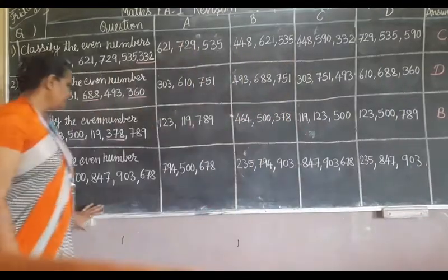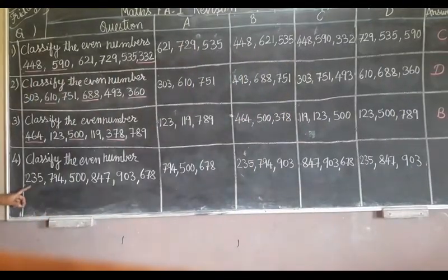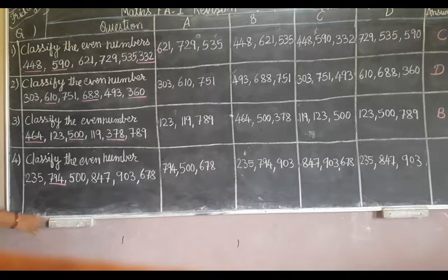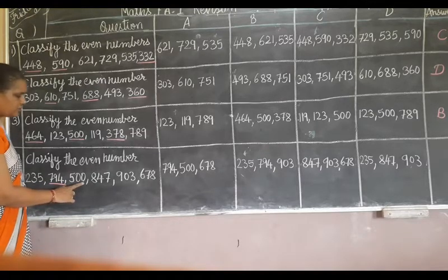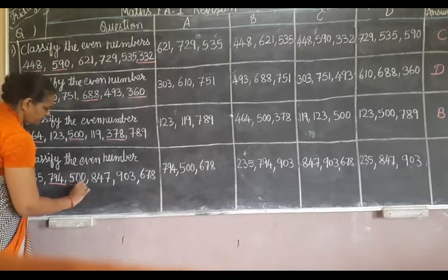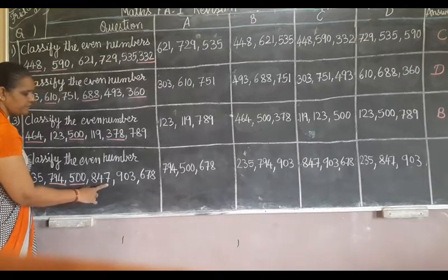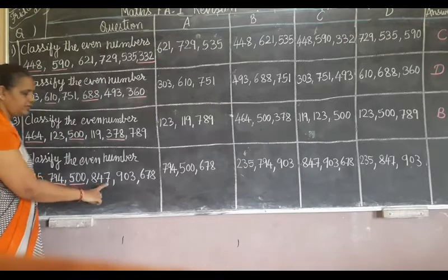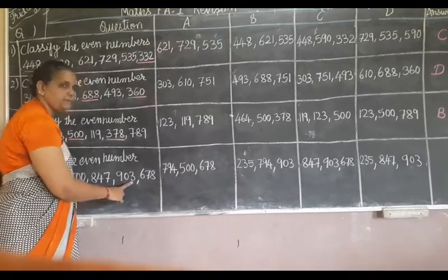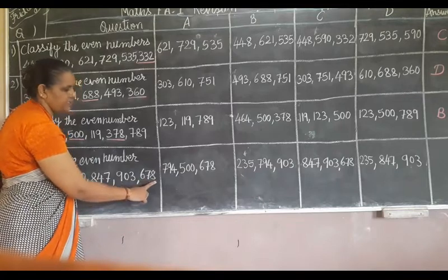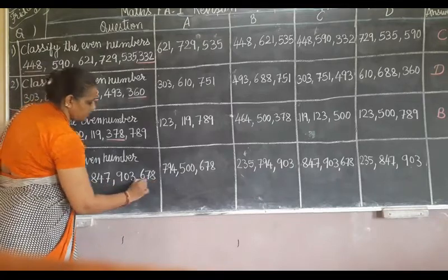Now the 4th one: 235 — odd number. 794 — even number. 500 — 0 is an even number. 847 — 7 is an odd number. 933 — 3 is an odd number. 678 — 8 is an even number.